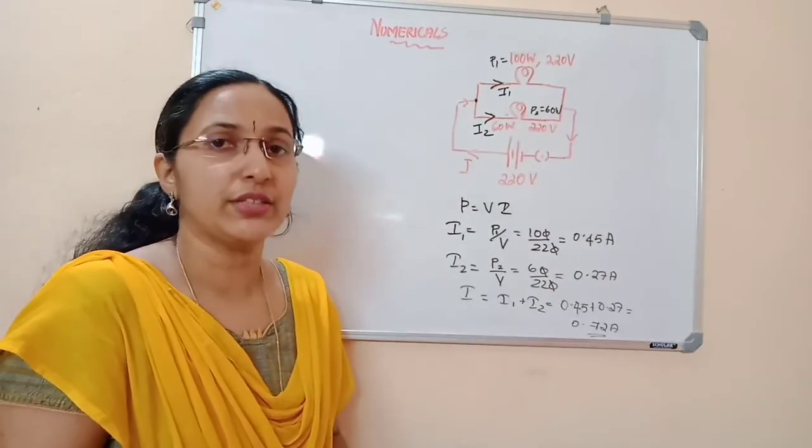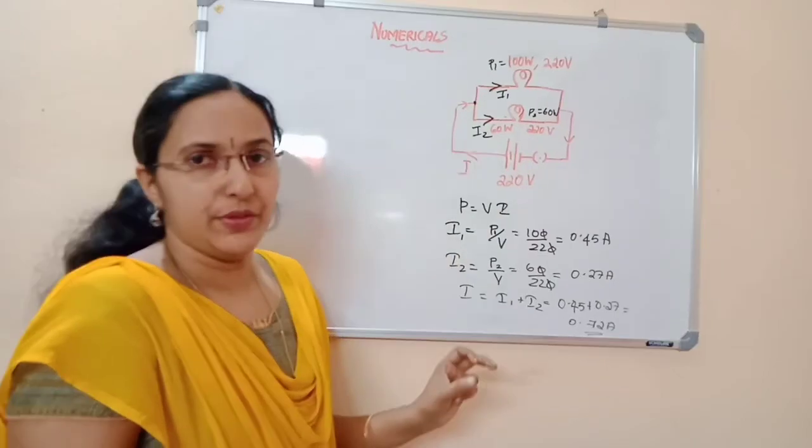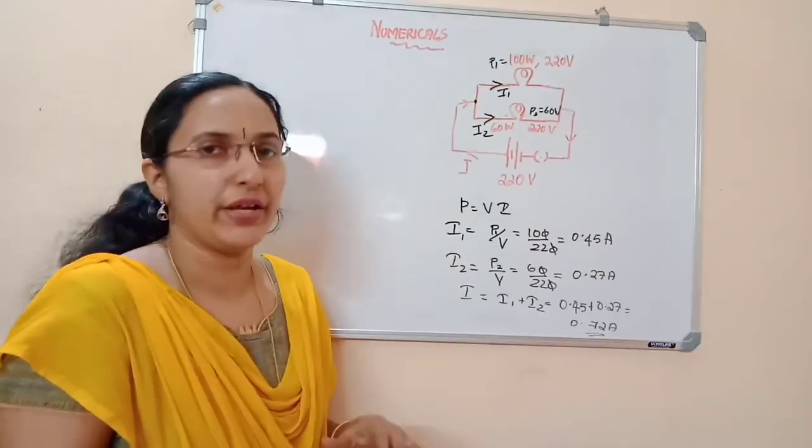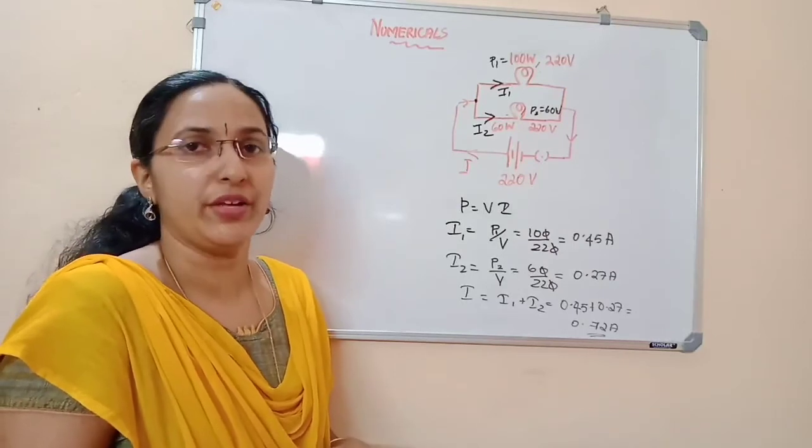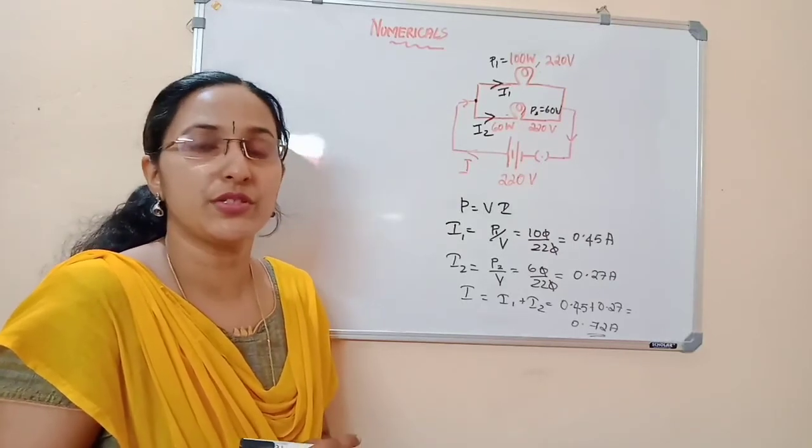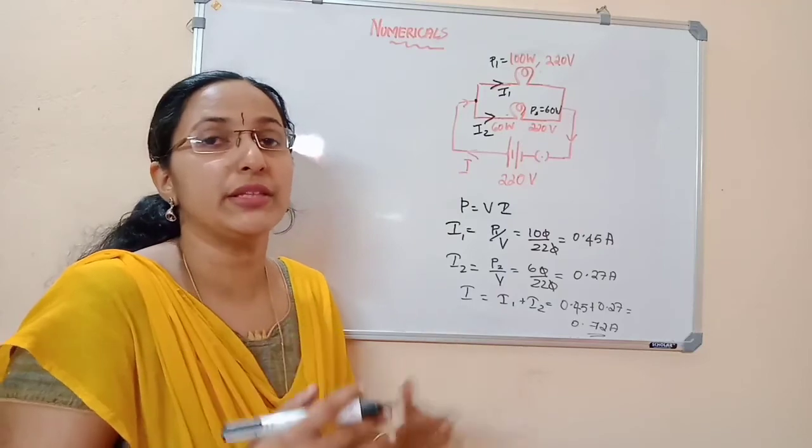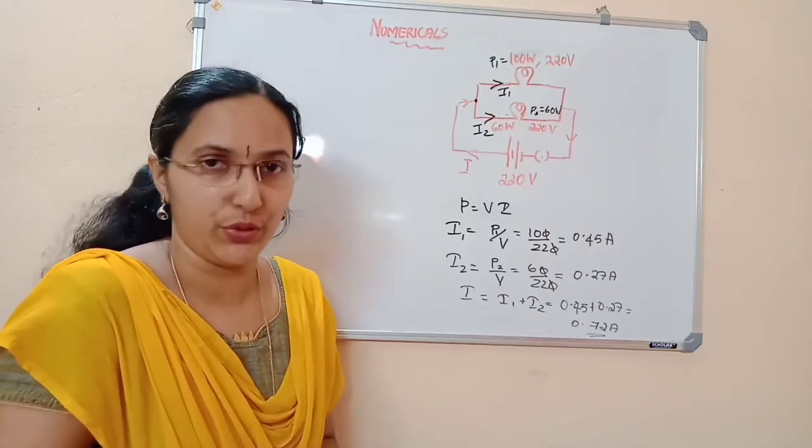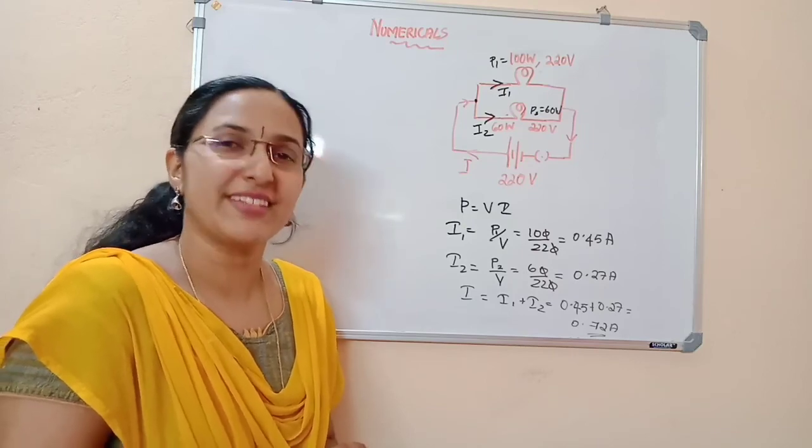You have to find out the current through each bulb. Just use the equation: i1 equals P1 by V, i2 equals P2 by V. Another way can also be used. What is another method to solve this problem? That's an assignment for you. Thank you for listening to the class.